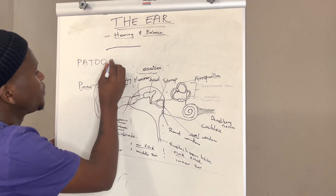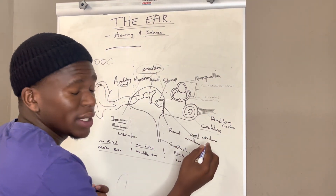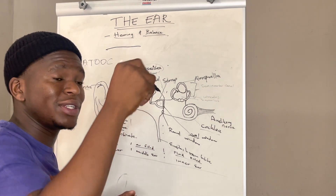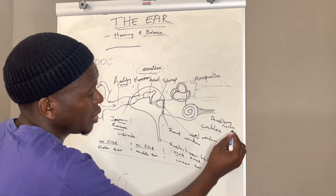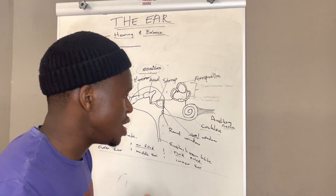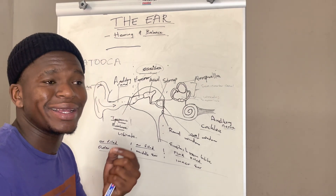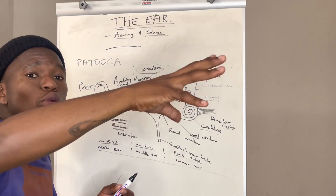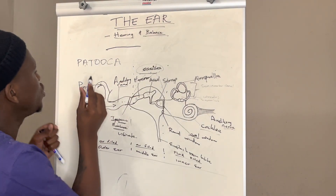When the oval window vibrates, it sets up pressure waves in the cochlea. The organs of Corti in the cochlea are then stimulated to convert those pressure waves into nerve impulses. The nerve impulses are sent to the cerebrum via the auditory nerve for interpretation, and they are interpreted as hearing. Remember, the cerebrum is the part of the brain responsible for receiving and interpreting all body sensations, and hearing is one of those sensations.